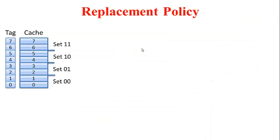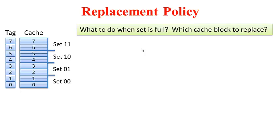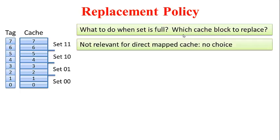One important design component in a set associative cache is the replacement policy — the scheme used to determine which cache block to evict when a set is full and a new block from main memory is coming in. Of the three cache designs, for which does this policy not matter? For the direct-map scheme, there is no choice: the set size is 1, so if that cache block is occupied and another main memory block maps to it, the current resident must be evicted and replaced.